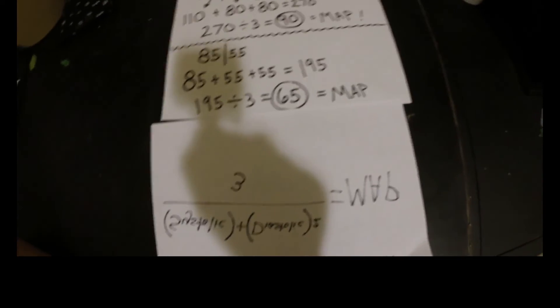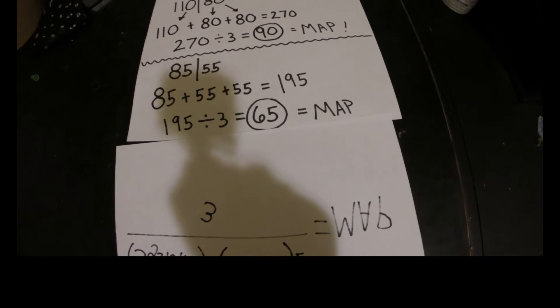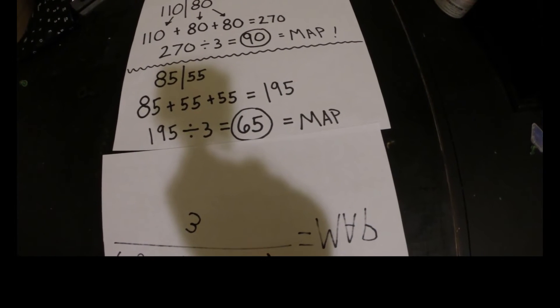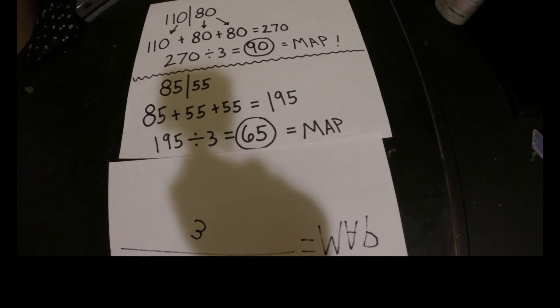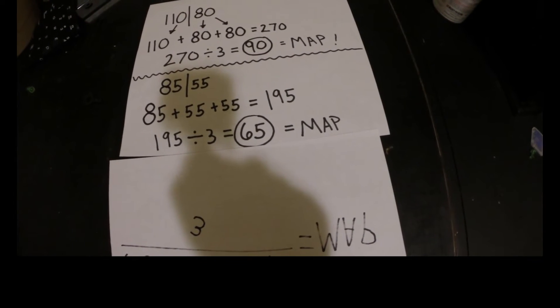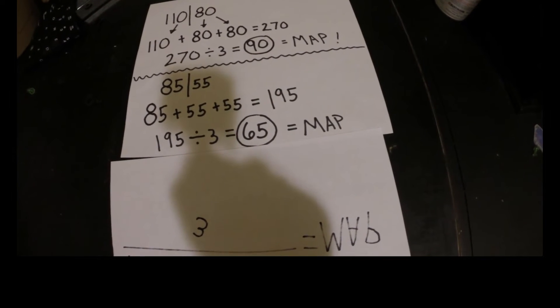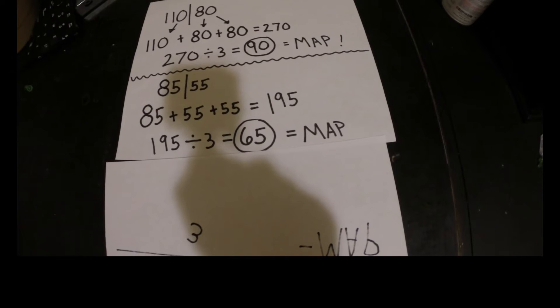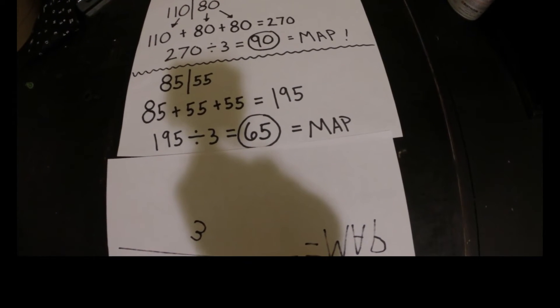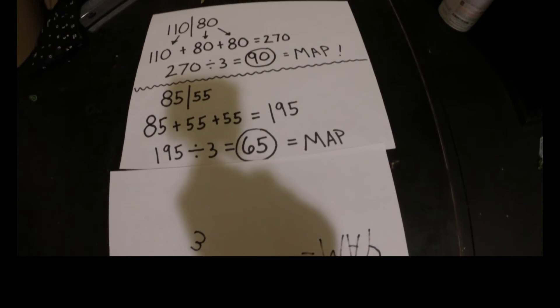So that's it. That's calculating MAP. It's really important to understand it because you need to be aware of the danger that the kidneys can be in. If they're not getting enough blood perfusing to them, then they'll start going to kidney failure. Also, once one organ starts to fail, other organs can also follow.